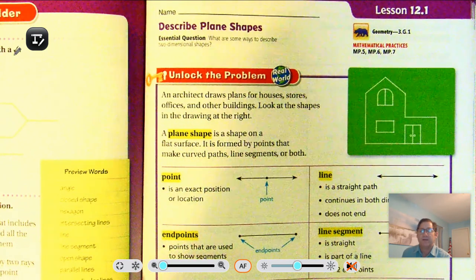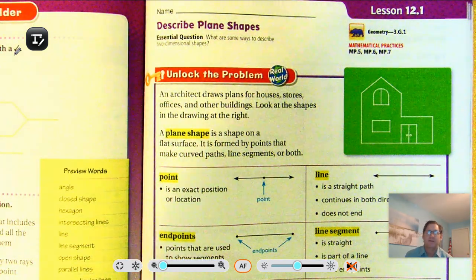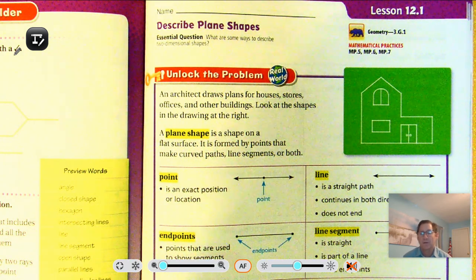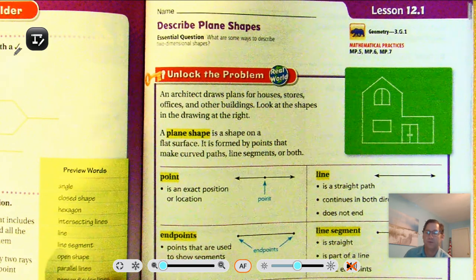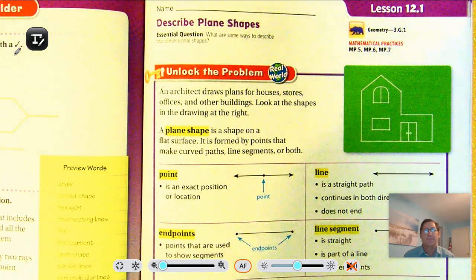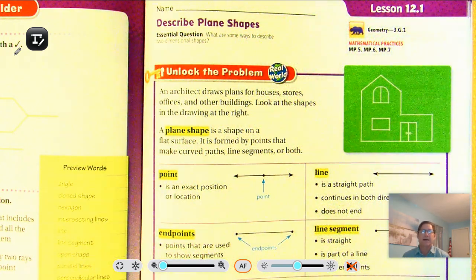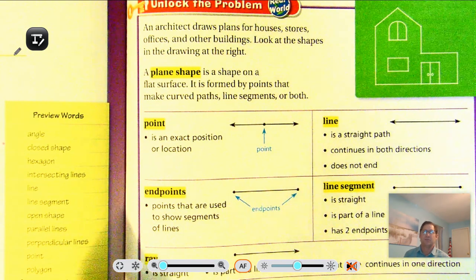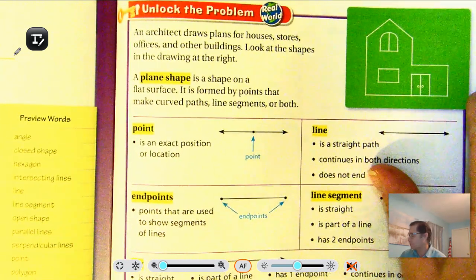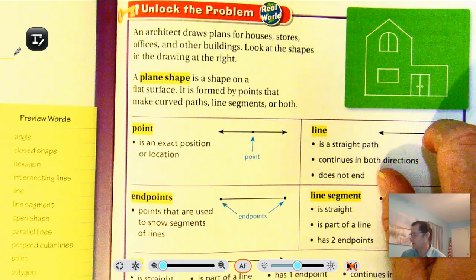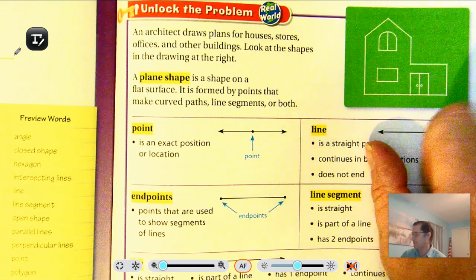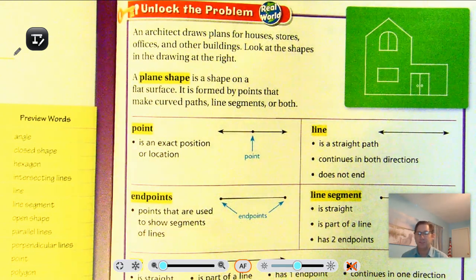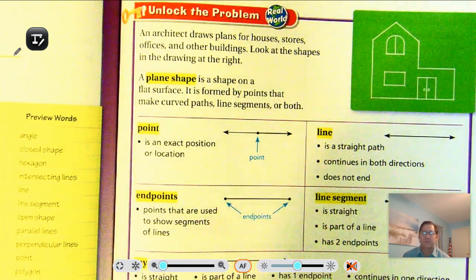Hello everybody. Today we're going to continue with lesson 12.1: Describe Plane Shapes. The essential question we should be able to answer at the end of our lesson is: what are some ways to describe two-dimensional shapes? We are on page 505 of the third grade textbook. An architect draws plans for houses, stores, offices, and other buildings. Look at the shapes in the drawing — we see rectangles, a shape with five sides, and shapes with curved lines, like circles. So these are plane shapes.